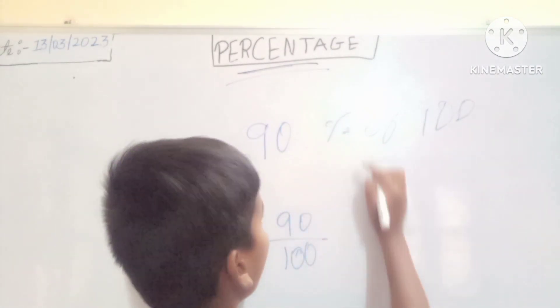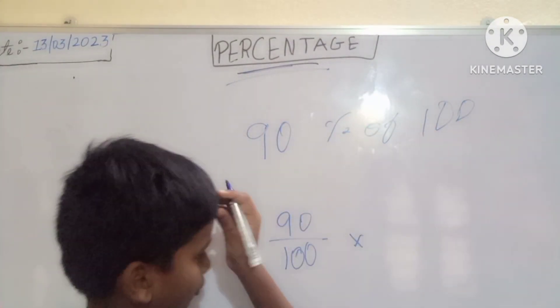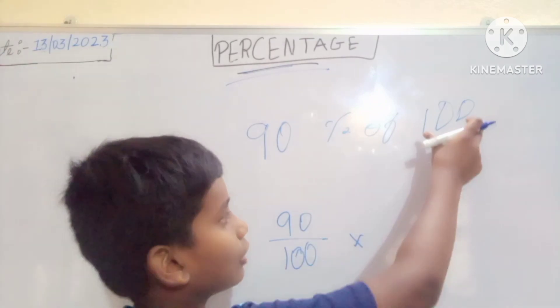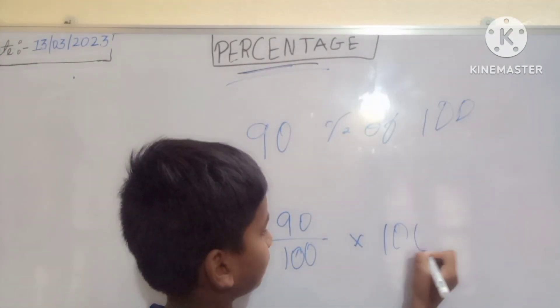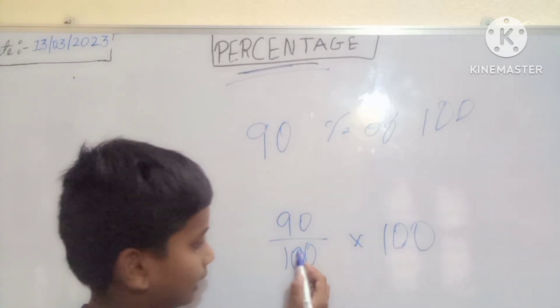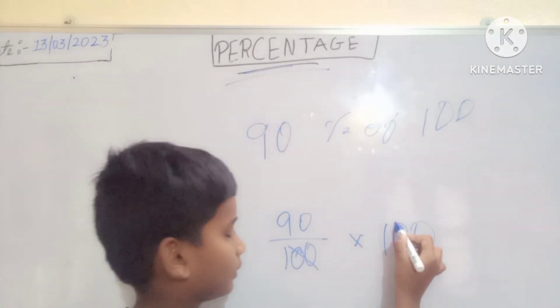Now what is 100? Keep the 100 as it is. Now cut the two zeros, one and one. So what is left over? 90 is left over.